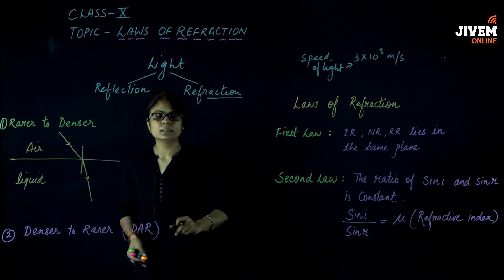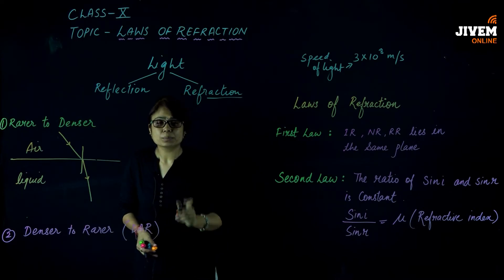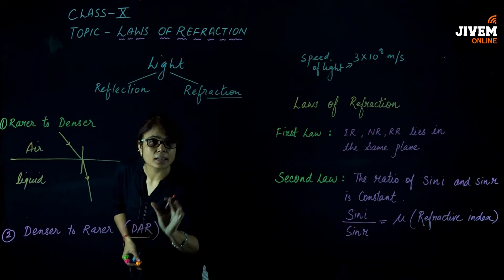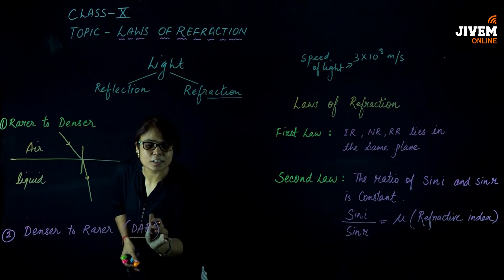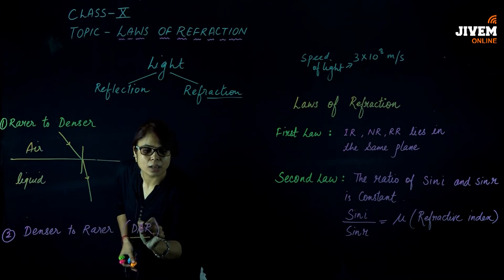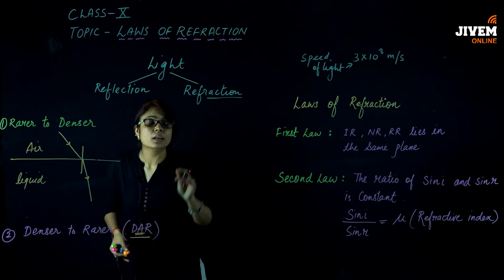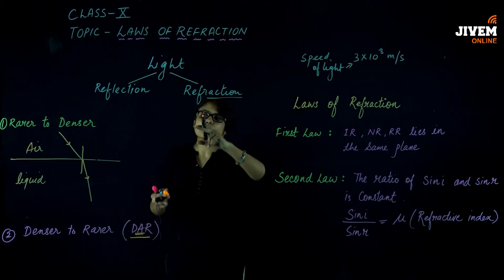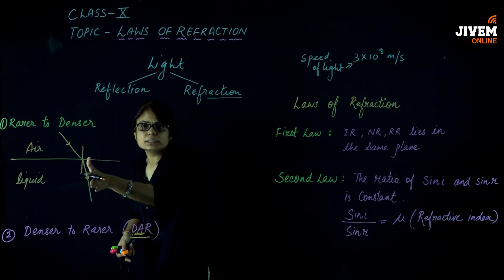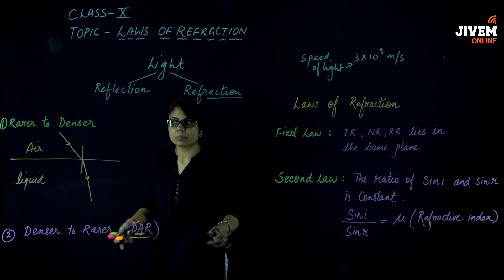Next, if we talk about denser to rarer: here is a simple trick — DAR. DAR means denser to rarer, which means away from the normal. Always remember these two concepts where students get confused: rarer to denser means towards the normal, denser to rarer means away from the normal.